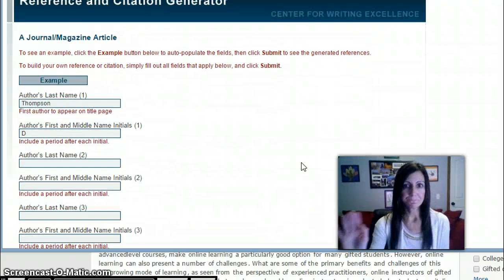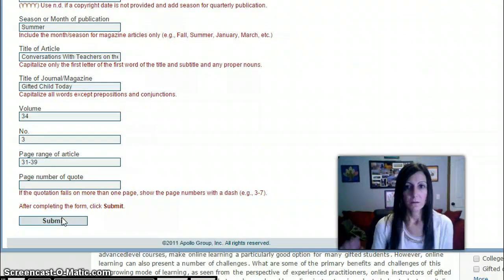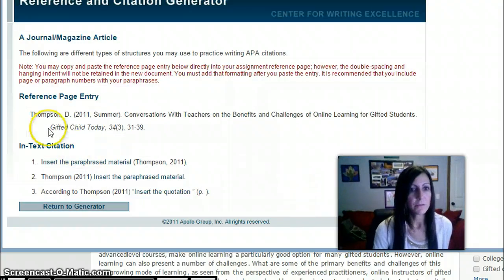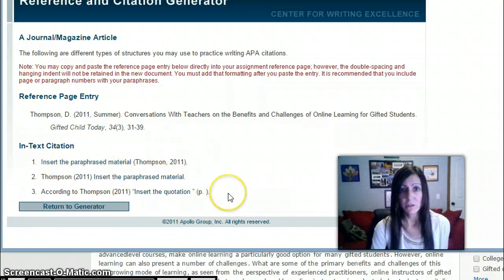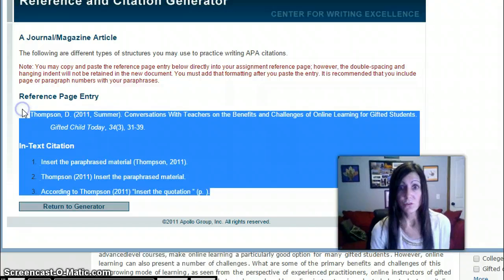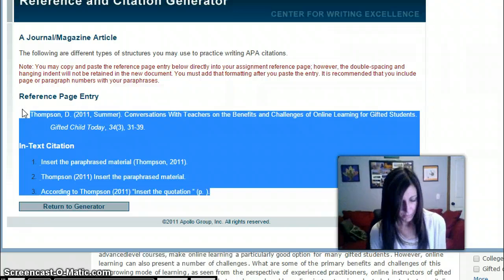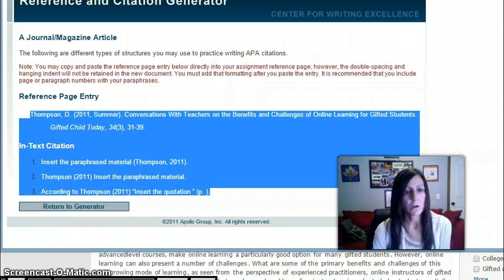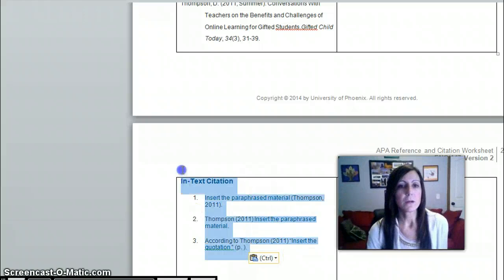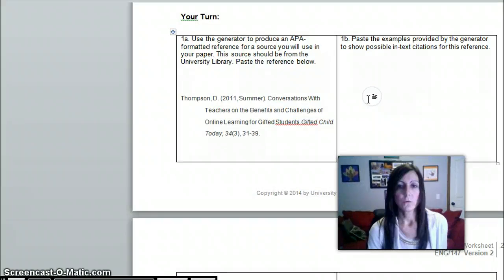In this case I'm happy, I've got everything entered. I'm going to hit submit. So this has generated for me my reference citation and it has also generated what my in-text citations might look like. Remember in-text citations denote paraphrased information or they denote direct quotes. So I would have to go ahead and enter that paraphrased information into the right part or I would have to go ahead and enter the direct quote into the right part. But for the purposes of our assignment,